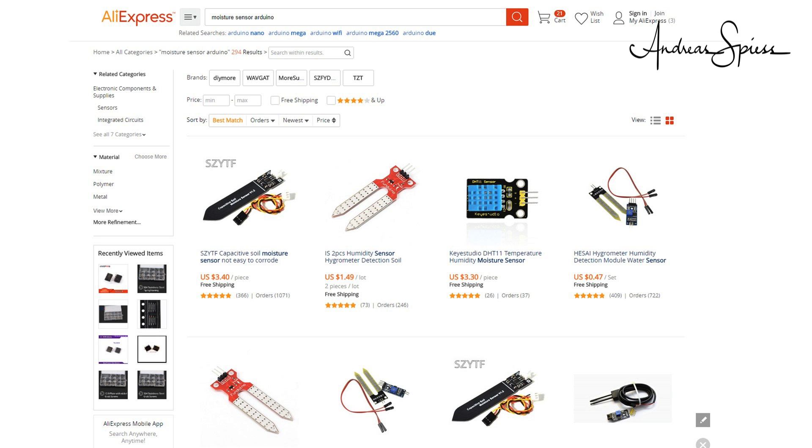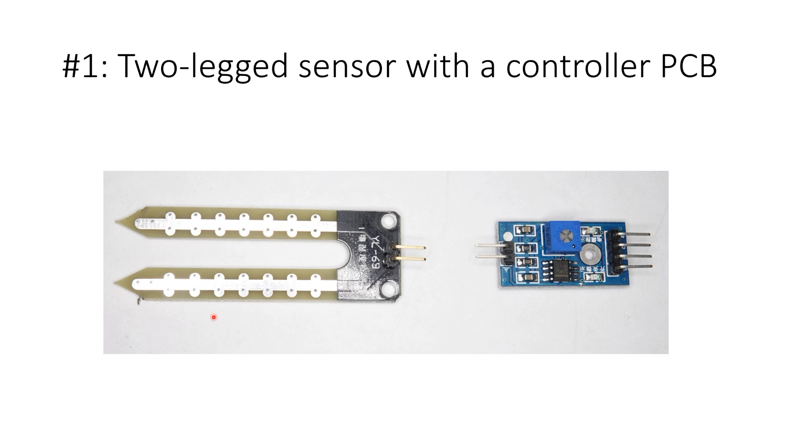If you go to our usual purchasing platforms and enter moisture sensor or water sensor and Arduino, you get these proposals. A two-legged sensor with a separate small controller PCB. It has two pins on the sensor PCB and four pins to connect it to a microcontroller. It provides a digital and an analog output. The digital output can be adjusted by a trimmer. There are conducting tracks exposed on both legs of the sensor.